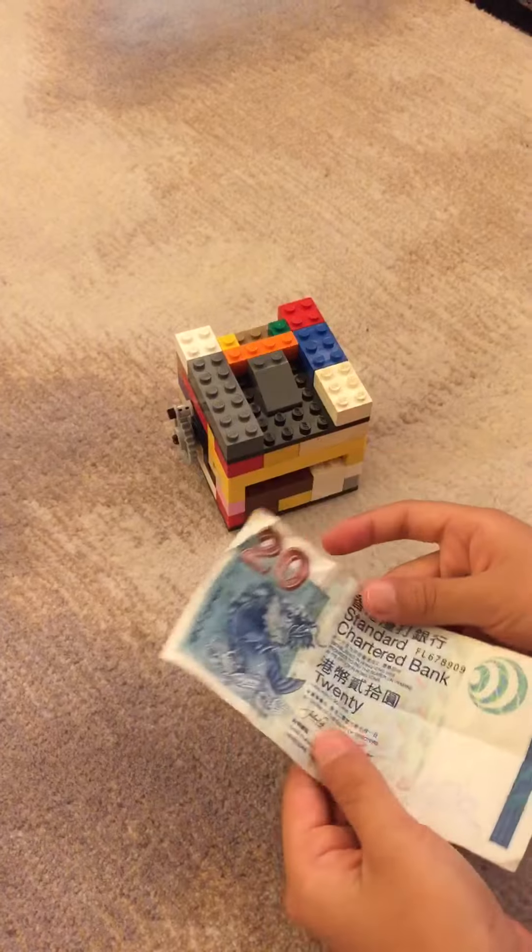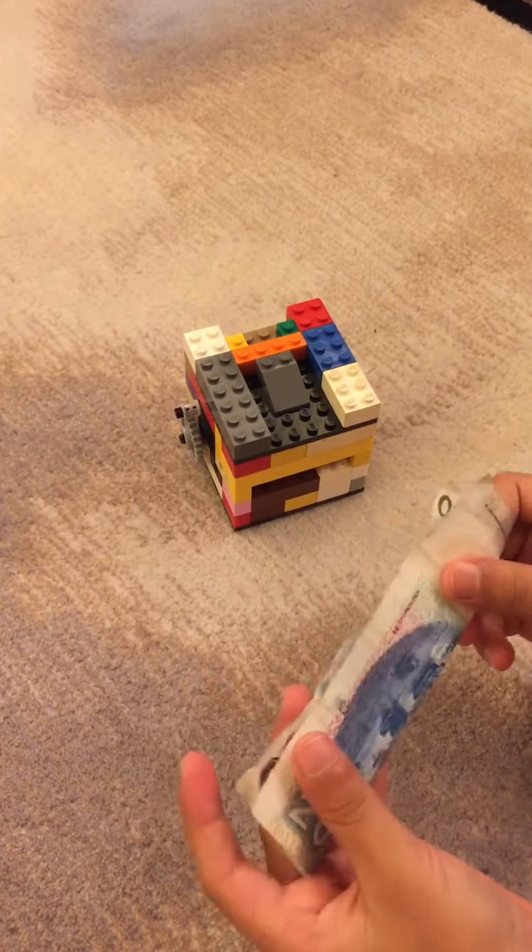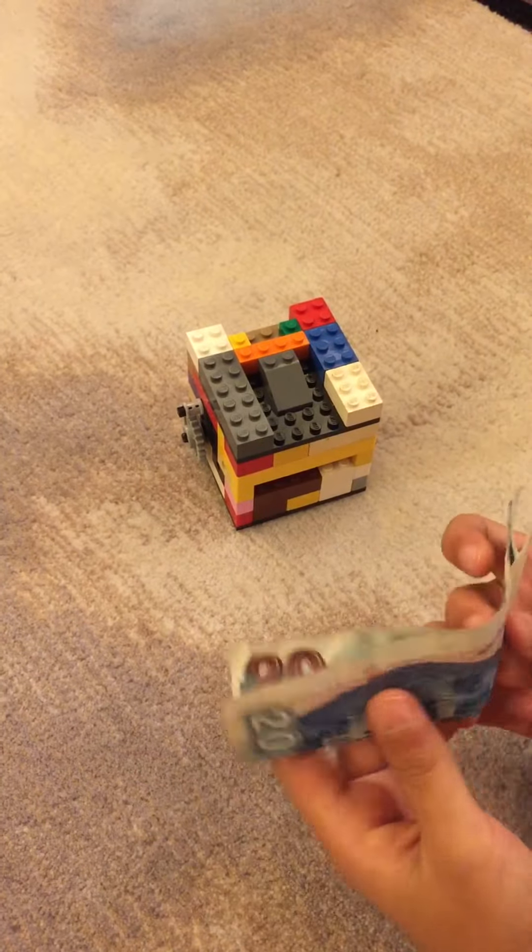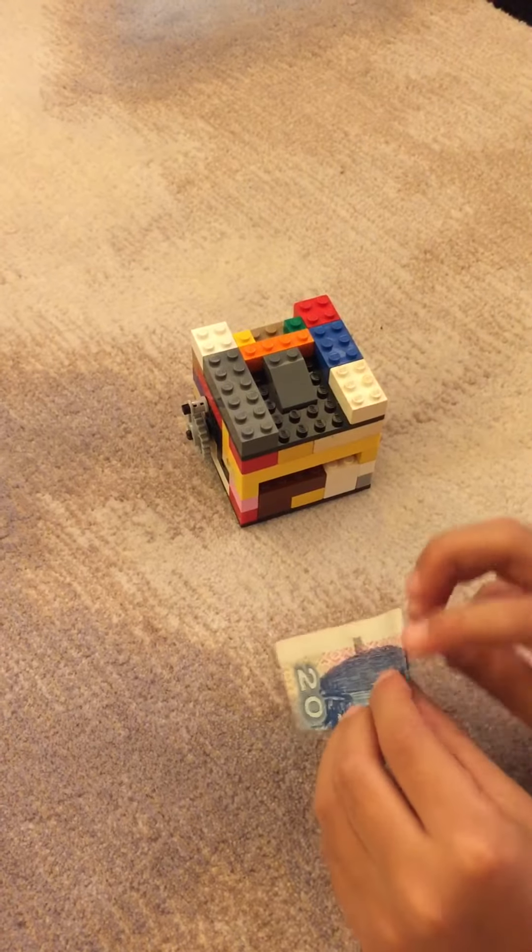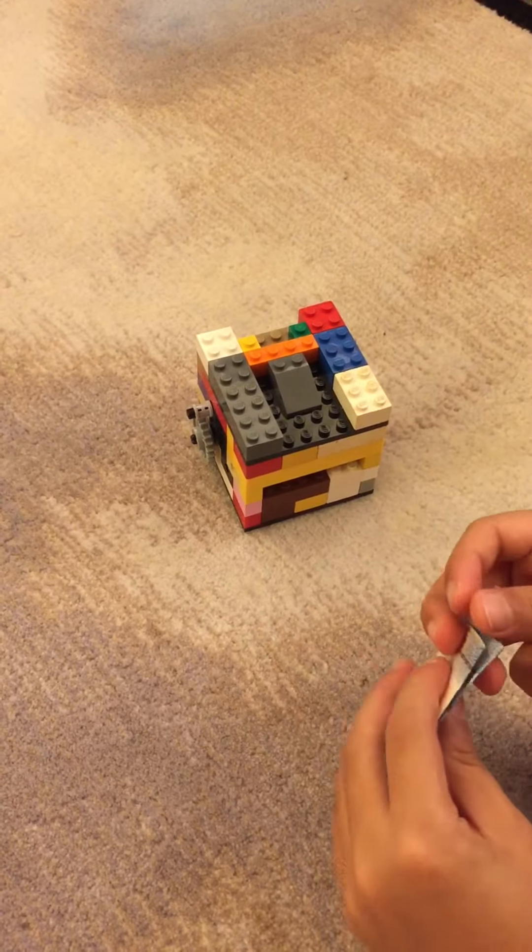So first let's start with the bill. You fold the bill in half this way and you fold it again. You can see this is the folded end and this is the open end.